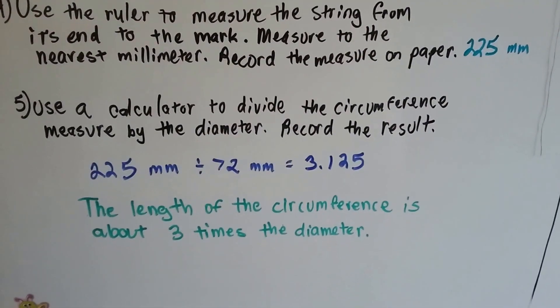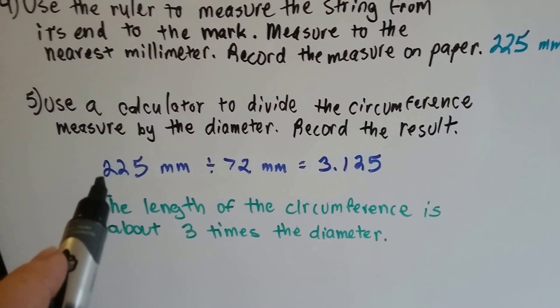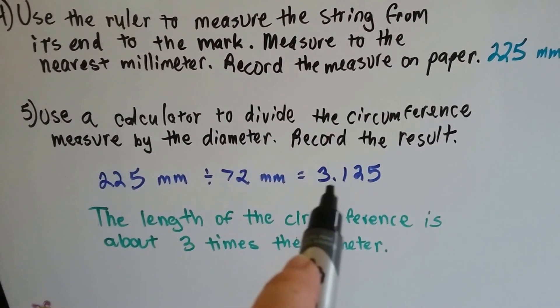You can use a calculator to divide the circumference measure by the diameter. And I recorded the result. 225 millimeters divided by 72 millimeters is about 3.125.